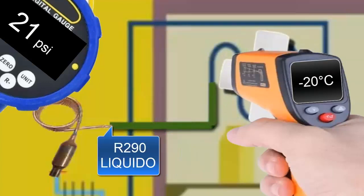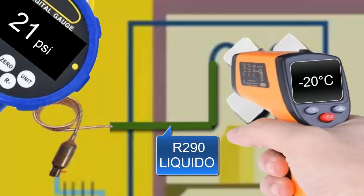With this pressure, the R290 in the evaporator achieves a temperature of minus 20 degrees Celsius.